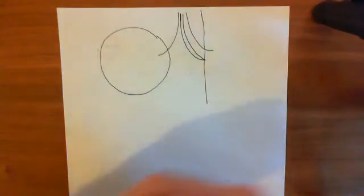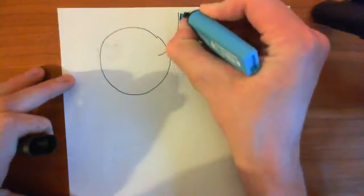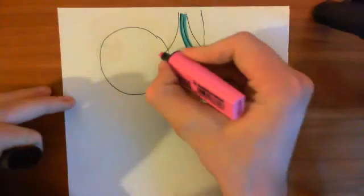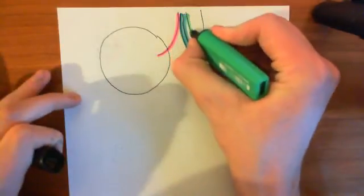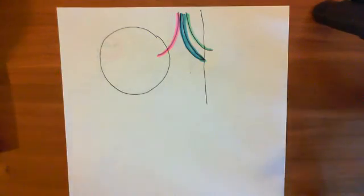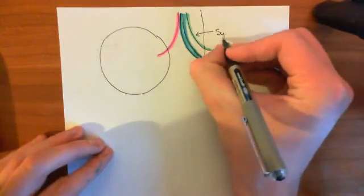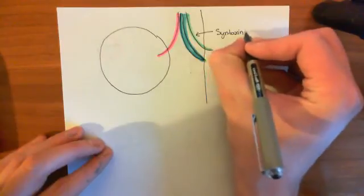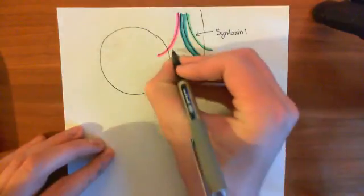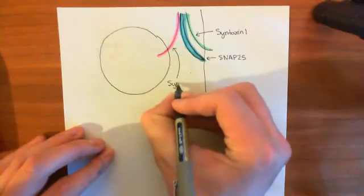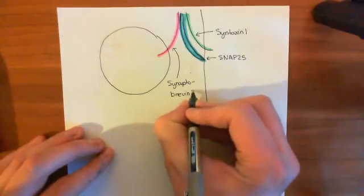Okay, so let me color these in. So SNAP25 we'll have in blue here. In pink we'll have synaptobrevin 2. And then finally in green we'll have syntaxin 1 here. Alright, okay, so let me label them all up. And they form this core snare complex, which at the moment is a trans core snare complex. So this is syntaxin 1, this is SNAP25, and this is synaptobrevin 2 here, which is the V-snare.